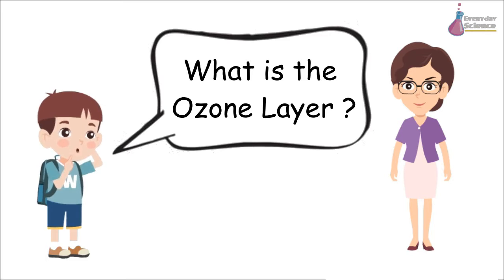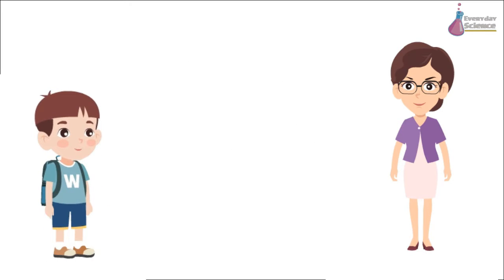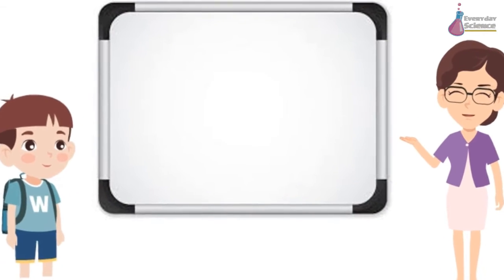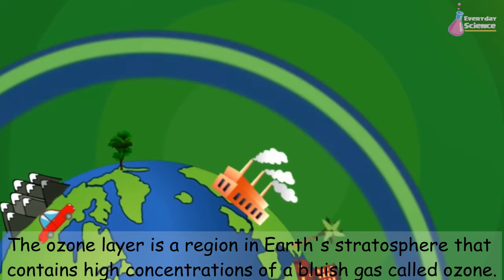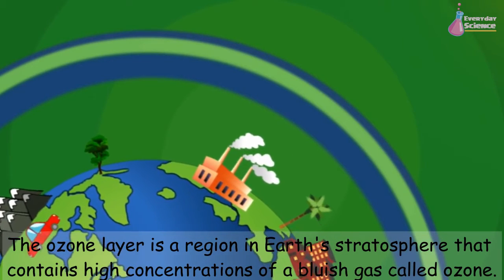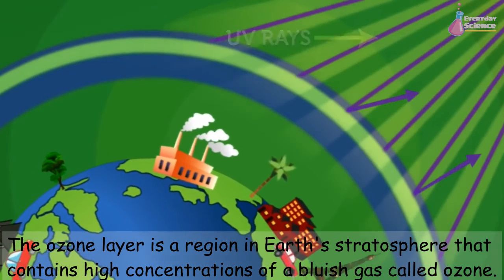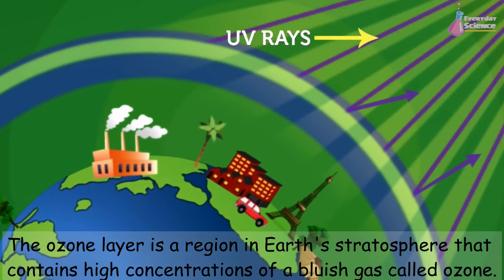What is the ozone layer? The ozone layer is a region in Earth's stratosphere that contains high concentrations of a blueish gas called ozone.